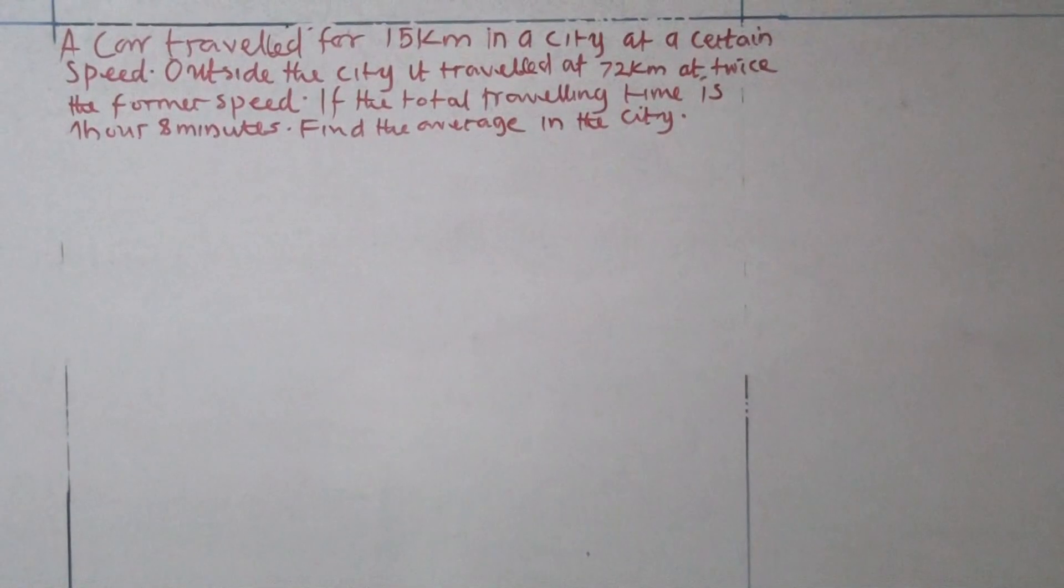In this tutorial, we're going to look at this word problem leading to linear equations. A car traveled for 15 kilometers in a city at a certain speed. Outside the city, it travels 72 kilometers at twice the former speed. If the total time for the journey is one hour eight minutes, find the average speed in the city.